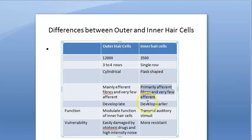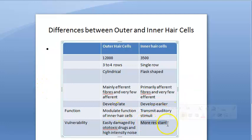Inner hair cells have a lot of afferent nerve fibers. Inner hair cells are early to develop and they transmit auditory stimuli — the main important role here is that the inner hair cell transmits the auditory impulses. Inner hair cells are also more resistant to ototoxic drugs and high-intensity noise. The outer hair cells, however, are very delicate and vulnerable to ototoxic drugs and high-intensity noise.